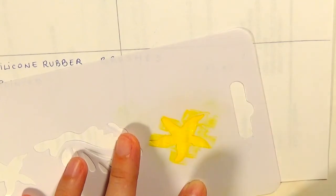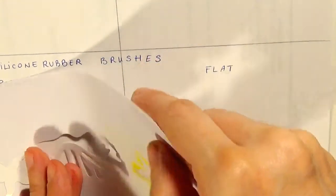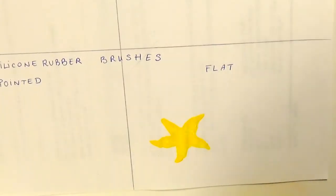After you have applied the color this way, you can lift the plastic and you have created the shape that you wanted to create.